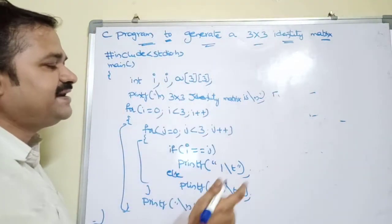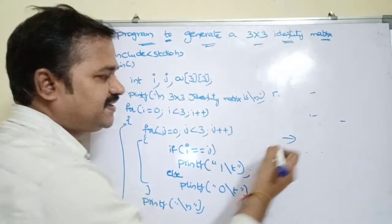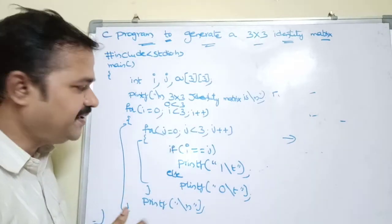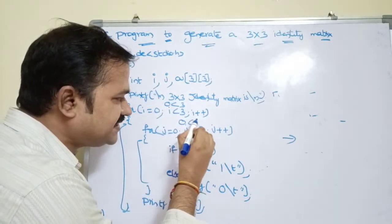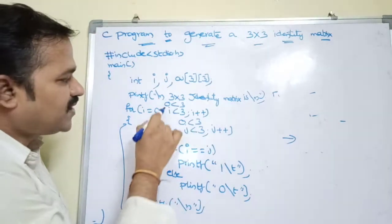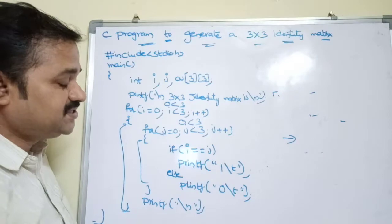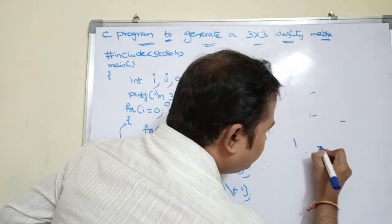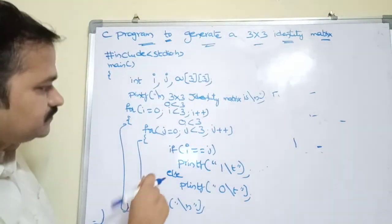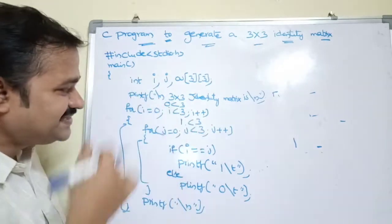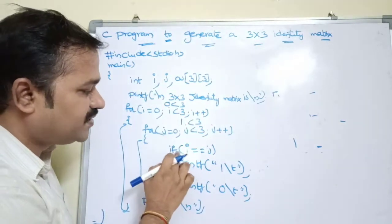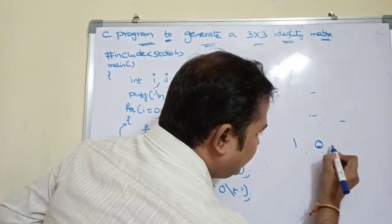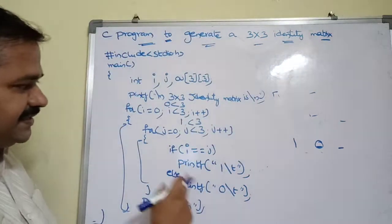The message "3 by 3 identity matrix is" will be printed and the cursor moves to a new line. For i=0, 0 < 3 is true so the body executes. For j=0, 0 < 3 is true. i=0, j=0: 0 == 0 is true, so 1 is printed with tab space. j becomes 1; i=0, j=1: 0 == 1 is false, so 0 is printed with tab space. j becomes 2; i=0, j=2: 0 == 2 is false, so 0 is printed with tab space.